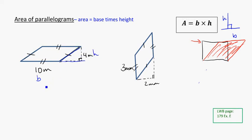So h is going to be 4. So my area here would be 10 times 4, which is equal to 40 meters squared, because it's area.